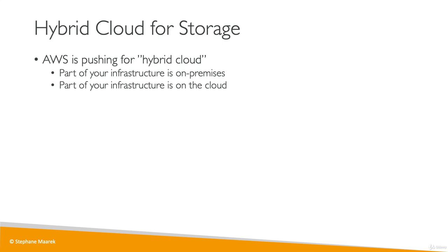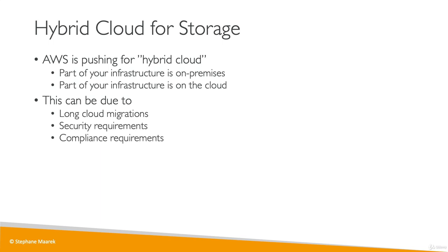Why? Maybe because sometimes you have created your on-premises infrastructure first and you're doing a migration, but it could be long — a long cloud migration. Or it could be for security or compliance requirements. Maybe it's your strategy to have part of it on the cloud and part of it on-premises. There are really different use cases for having two different ways of doing IT.